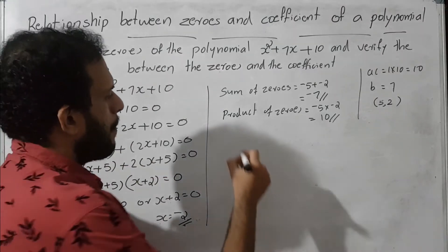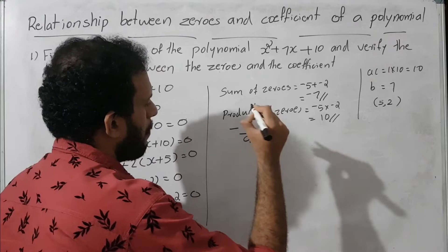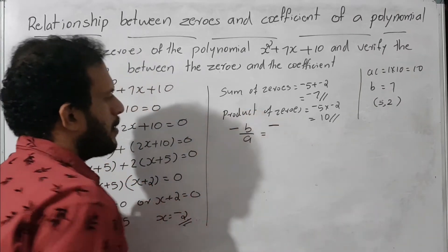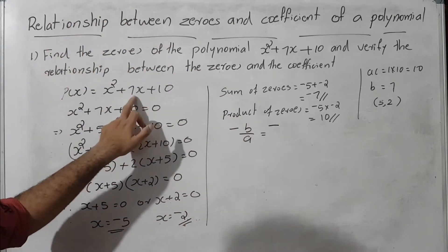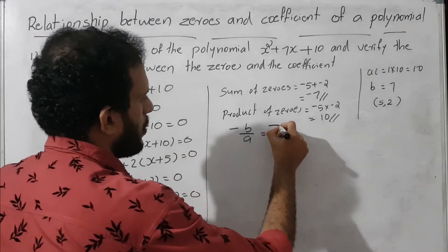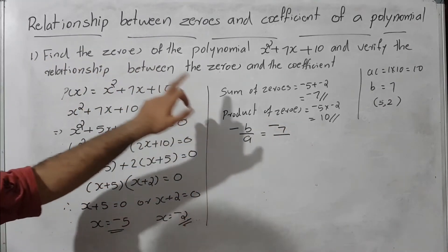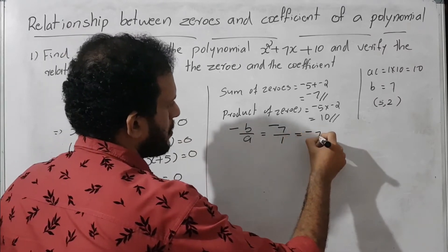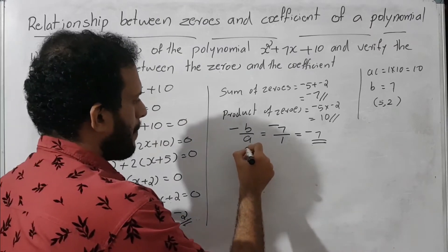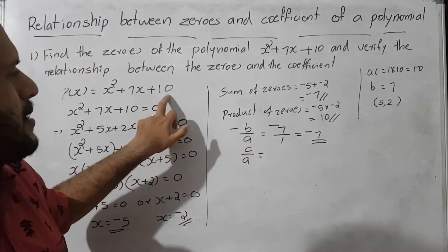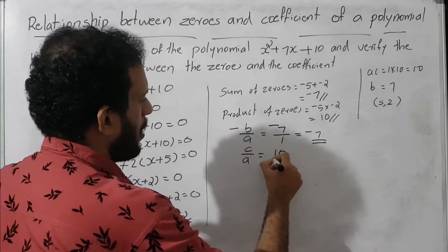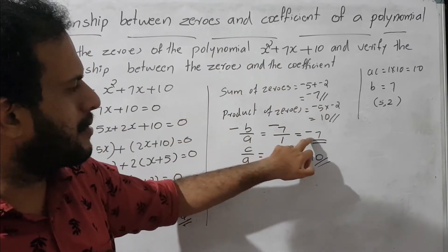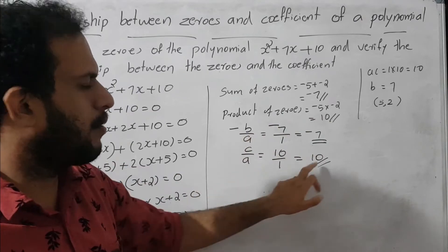Now we find minus B by A. B equals 7, A equals 1, so minus B by A equals minus 7 by 1 equals minus 7. C by A equals 10 by 1 equals 10. Sum of zeros equals minus 7, which equals minus B by A. Product of zeros equals 10, which equals C by A.